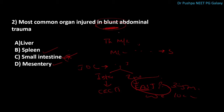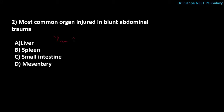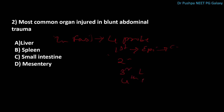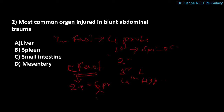In FAST we use 4 probes. The first probe is placed on the epigastric region to detect cardiac tamponade. The second probe is placed on the right hypochondrium. The third probe is on the left hypochondrium. The fourth probe is on the hypogastric region to find any pelvic collections. There is also E-FAST, meaning extended FAST, which uses 2 additional probes — totaling 6 probes — placed on the chest to detect any collection in the pleural cavities.